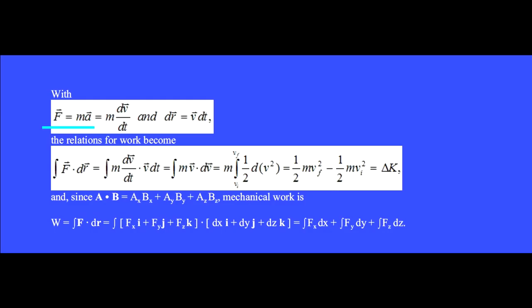With vector F equals mass times vector acceleration, which is mass times the time derivative of the vector velocity, and vector dr equals the velocity vector times dt, the relations for work become the integral of F dot dr. Since F is m dv/dt and dr is v dt, we cancel the dt's and have the integral of m v dot dv. This can be written as one-half the differential of v squared, which is 2v dv. We integrate from initial to final velocity and get one-half m vf squared minus one-half m vi squared, which is the change in kinetic energy K.